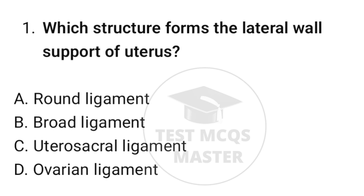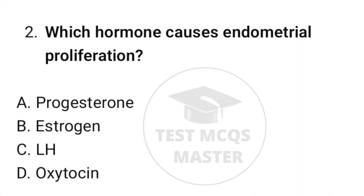Question number one: which structure forms the lateral wall support of the uterus? The correct option is B, broad ligament. Question number two: which hormone causes endometrial proliferation? The correct option is B, estrogen.